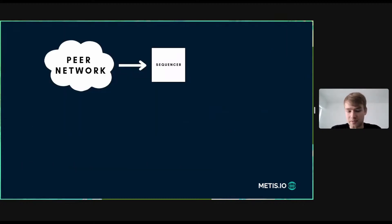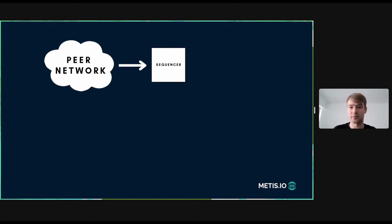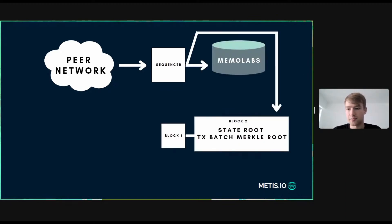There is a peer network where data gets fed into the system. When you make a transaction, it gets sent to the peer network. The sequencer downloads the transactions and then makes a post of the state root as well as a transaction batch Merkle root. That goes directly into MemoLabs and then afterwards to the actual chain itself.